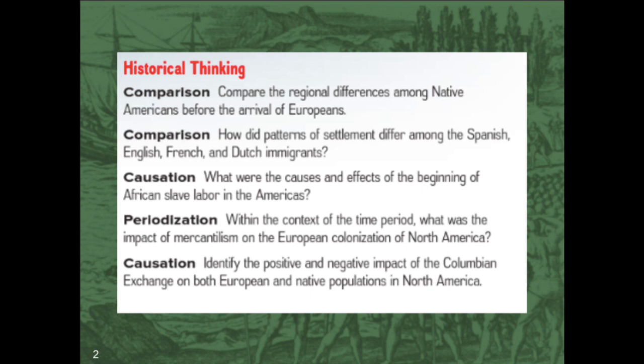We're also going to compare how different European countries settled in the Americas — what the Spanish did, what the English did with the French, and what the Dutch did: how they settled, how they worked, how they lived in the New World. We're also going to look at the cause and effects of the beginnings of African slave labor in the Americas. One of the prevailing themes we see over and over again is basically who is an American, and a lot of that we can trace to these early days in terms of the hierarchy created based heavily on labor.